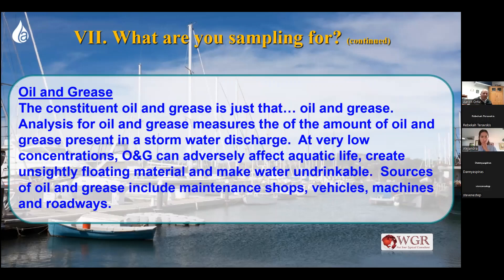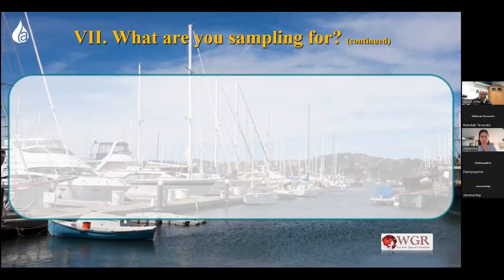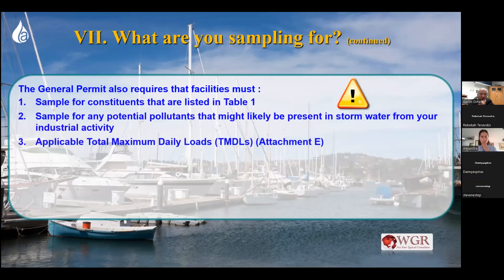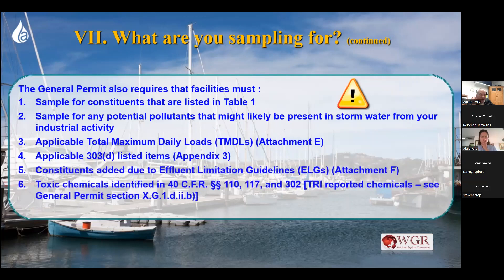Now, you might think: I do a lot of metal fabrication, so I'll just grab my three samples. But wait — the permit has a few more things. I refer to this as the infomercial permit, because just like an infomercial says 'but wait, there's more,' the permit is the same. You think you've got your requirements, but wait — there's more. You also need to sample for constituents listed in Table 1. Remember your SIC code — the four-digit standard industrial classification code listed in Attachment A — if your SIC code appears in Table 1, all the extra samples listed there are required.